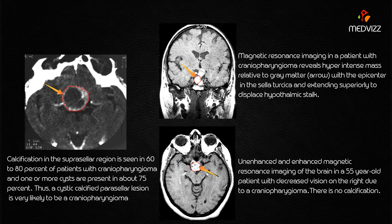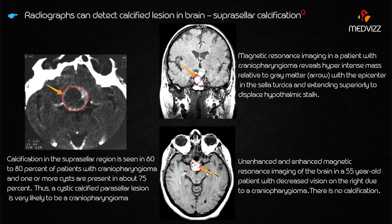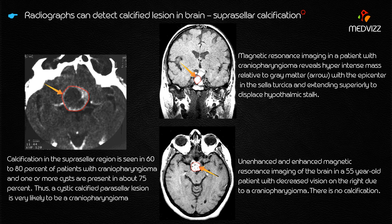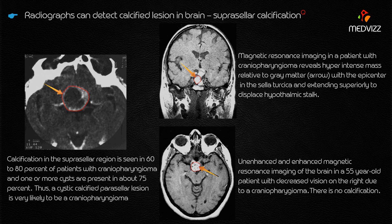For diagnosis, imaging is key. Radiographs can detect calcified lesions — suprasellar calcification is seen in approximately 80 percent of patients with craniopharyngioma. One or more cysts are present in about 60 to 75 percent of individuals. Therefore, a cystic calcified suprasellar lesion is very likely to be craniopharyngioma. The key phrase to remember is: calcified cystic suprasellar mass.